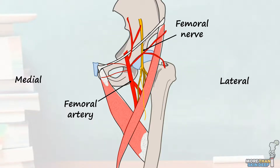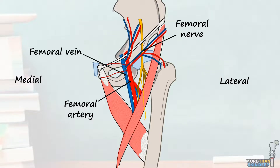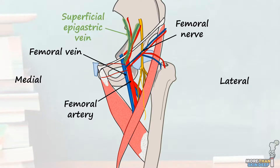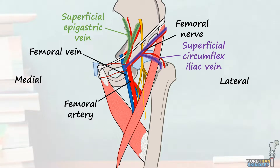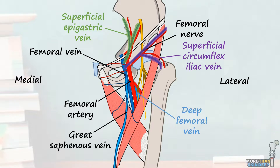Next on our journey medially is the large femoral vein. This is a continuation of the popliteal vein, which we covered in our previous video, and will eventually become the external iliac vein. Like the femoral artery, the femoral vein receives several tributaries in the femoral triangle. The main ones to be aware of are the superficial epigastric vein, the superficial circumflex iliac vein, the deep femoral vein, and the great saphenous vein. The great saphenous vein is a large superficial vein which pierces the overlying fascia at the saphenous opening and drains straight into the femoral vein — very similar to how the small saphenous vein joins the popliteal vein lower down.